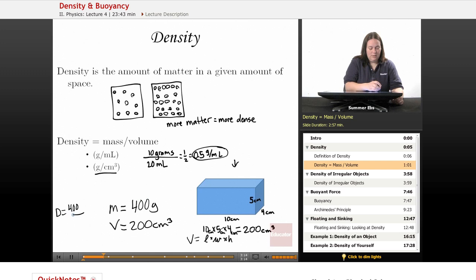And this was grams, and this is centimeters cubed. So your answer is 2 grams per centimeter cubed.